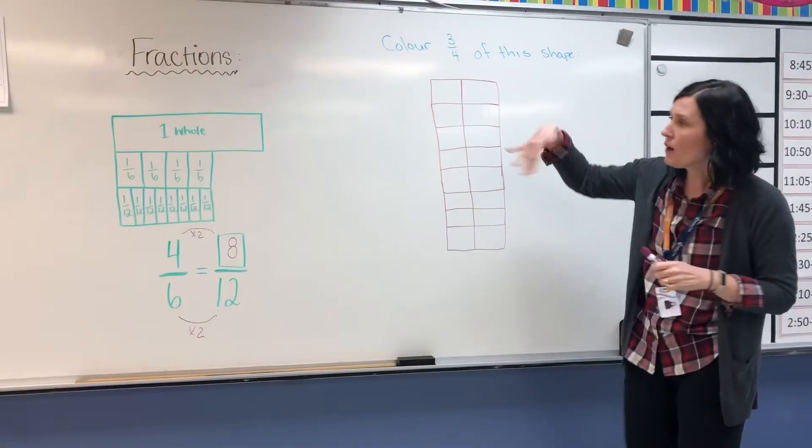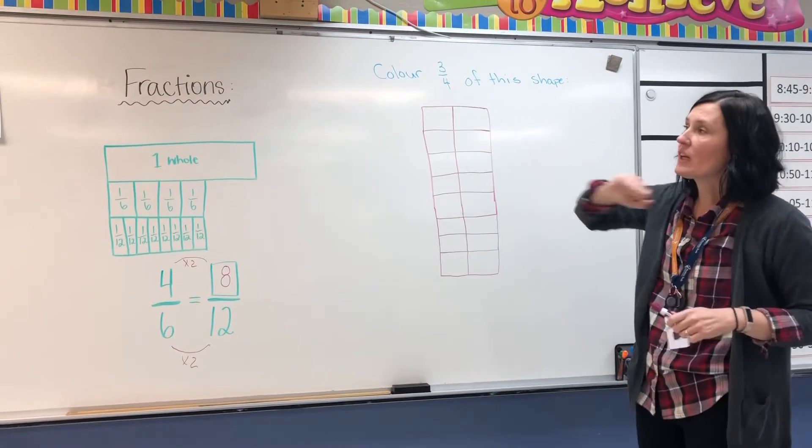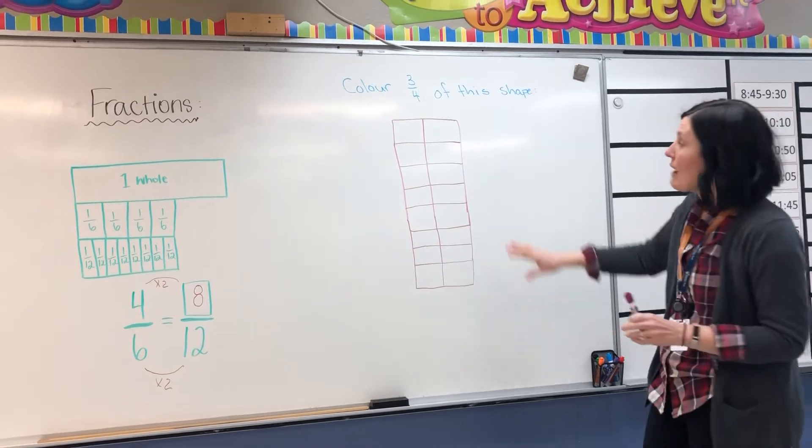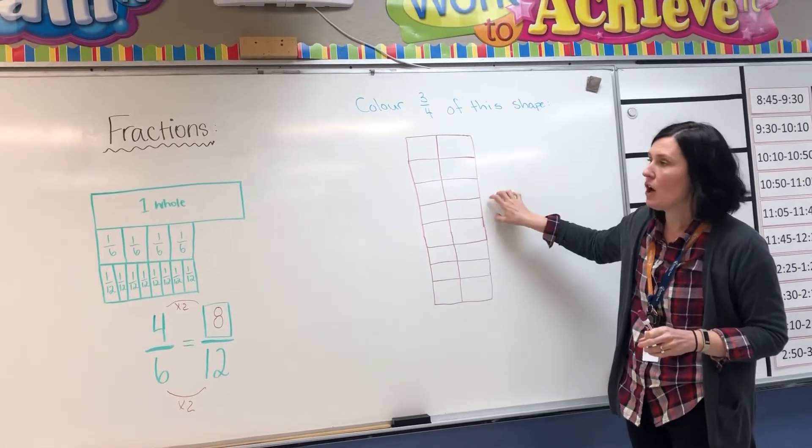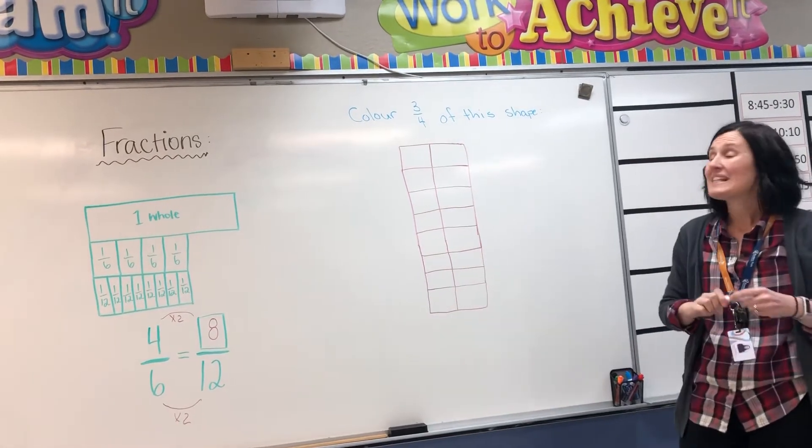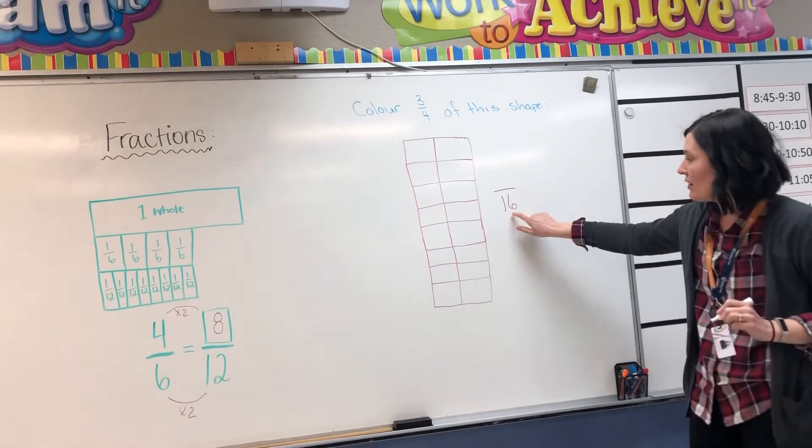So then we move on to the next portion of the worksheet. It's asking you to color in three fourths of each of those shapes. So I've made my very own shape. This one's not on your worksheet. I've divided a rectangle into 16 parts.